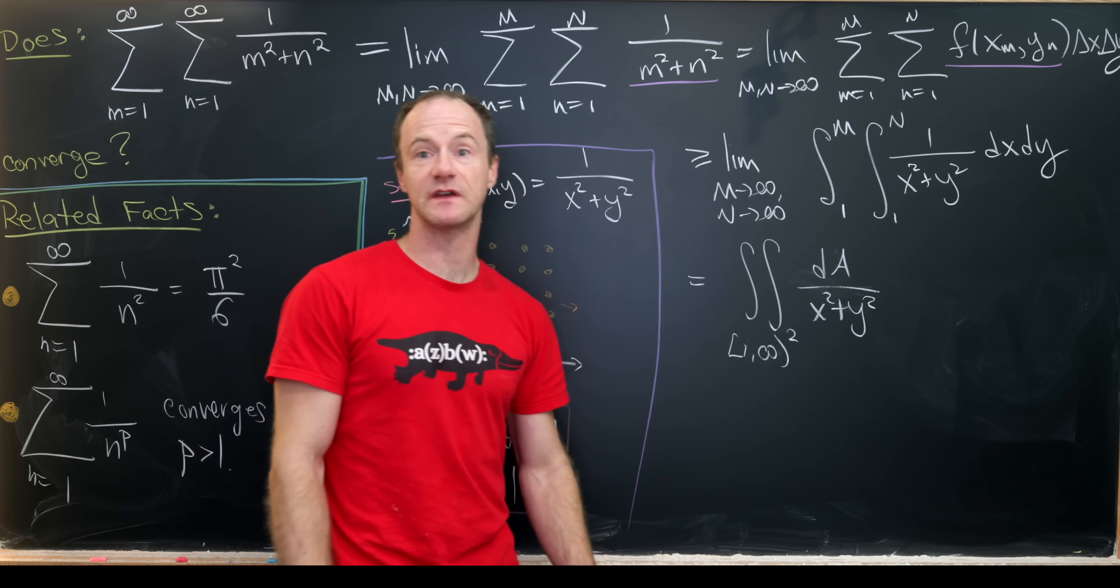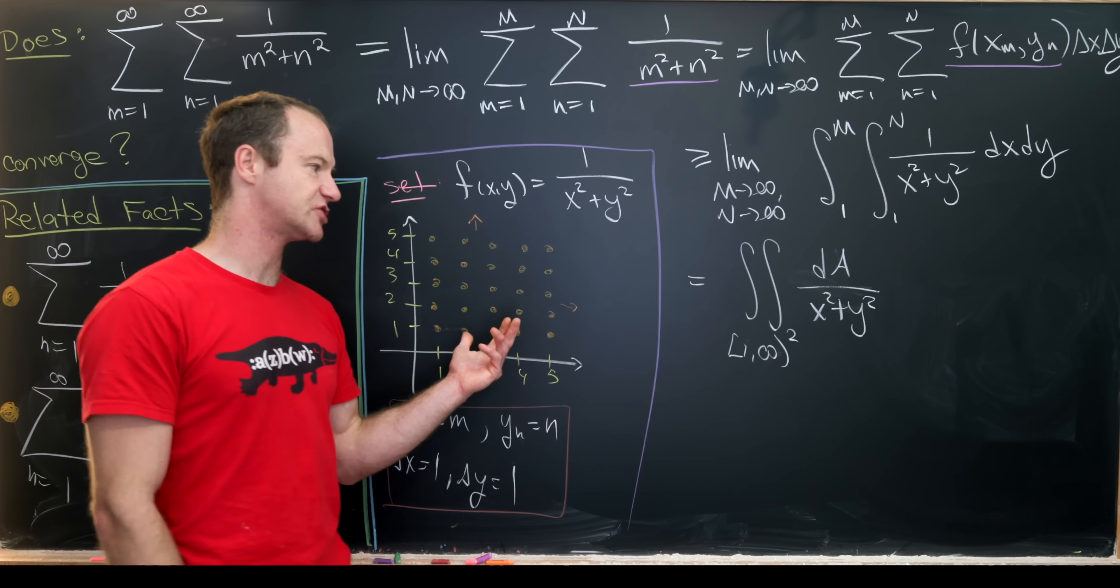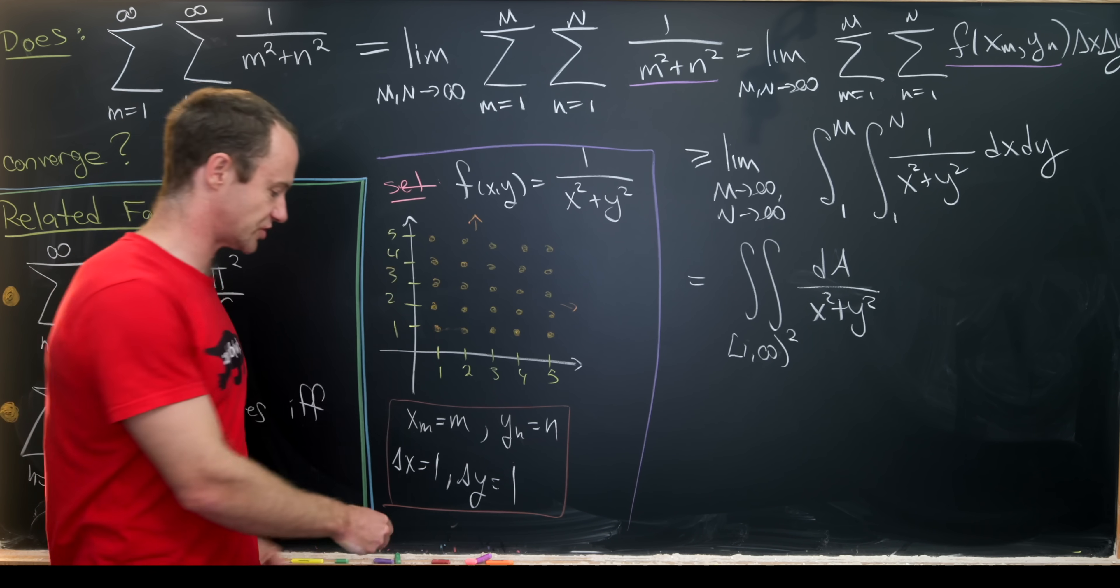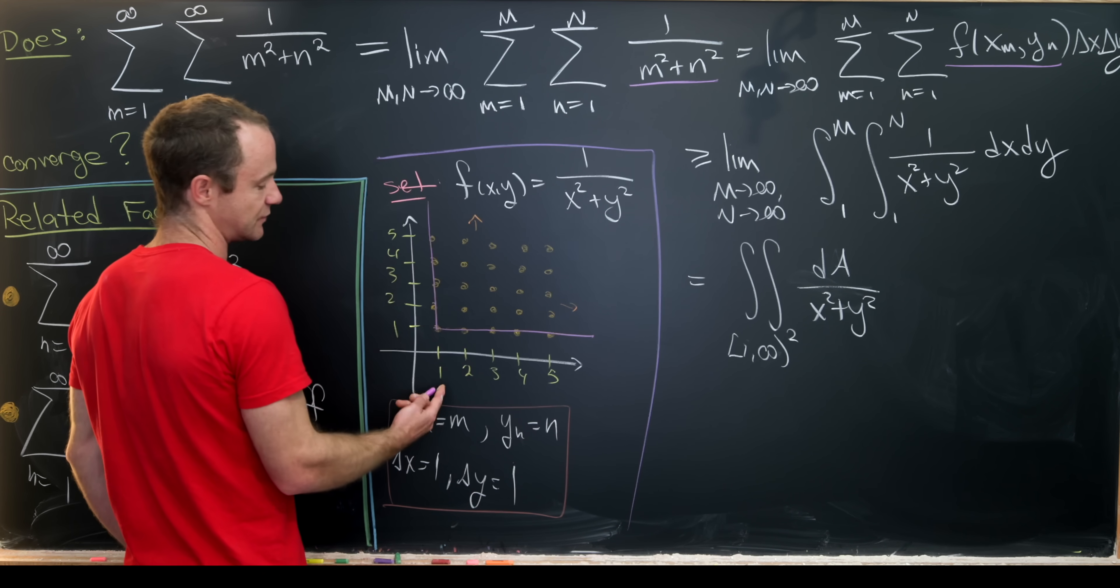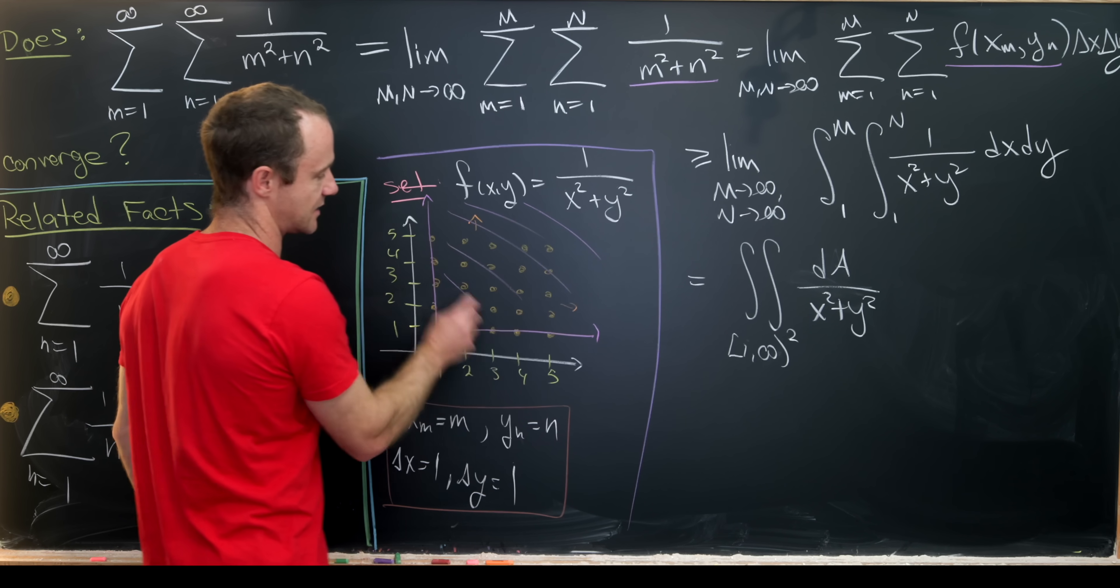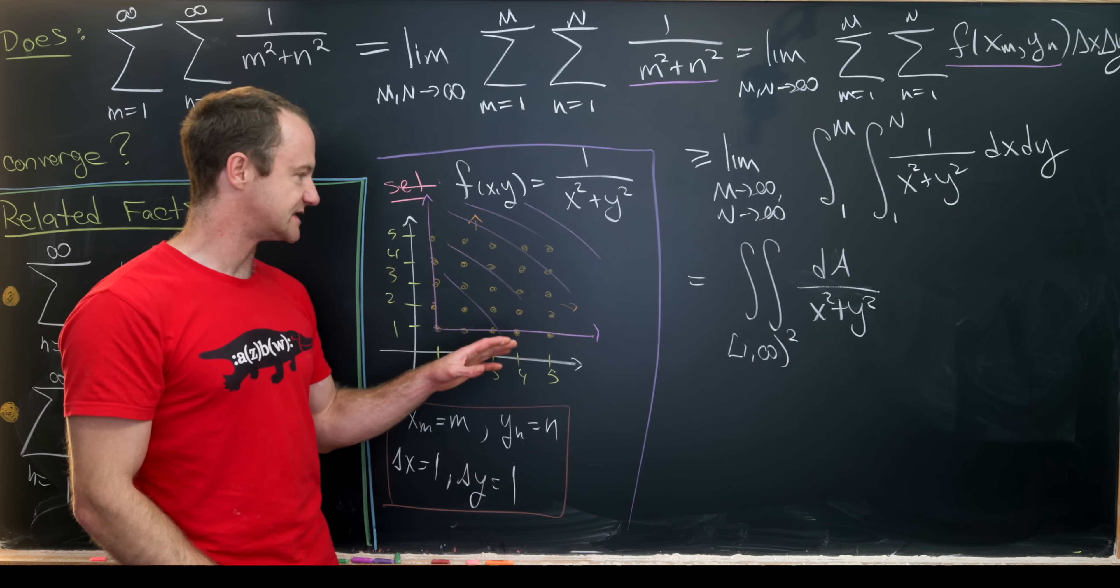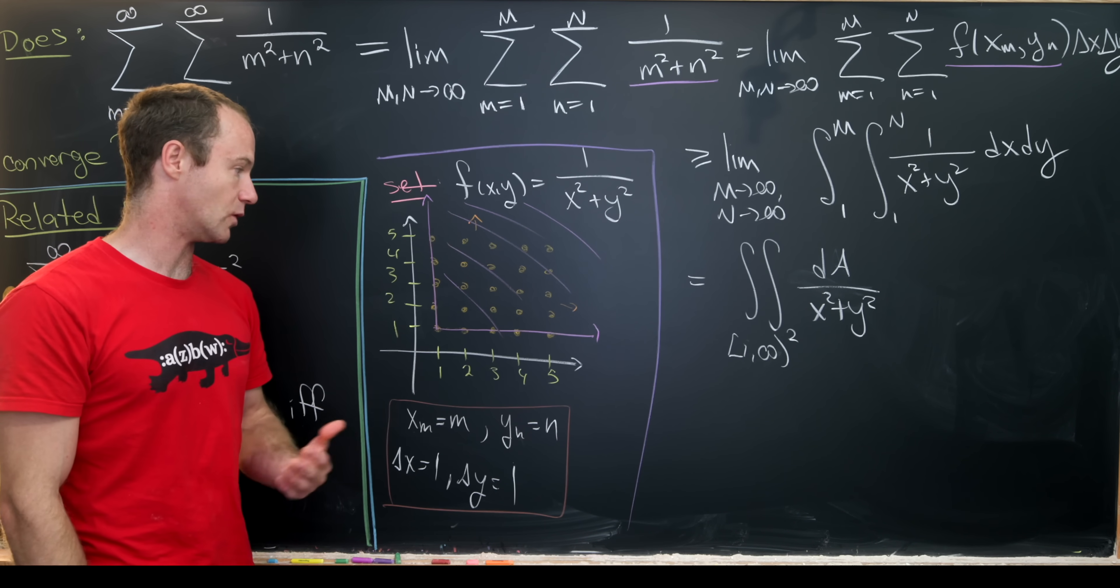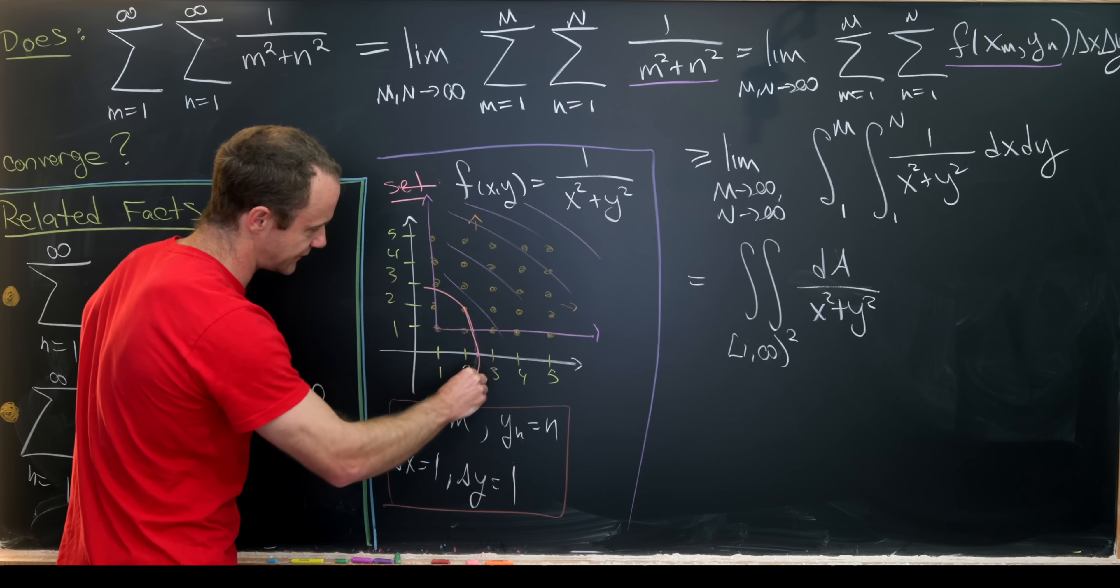Then since we're integrating over something that involves x squared plus y squared, that really motivates us to change to polar coordinates. But this is a bit tricky to change to polar coordinates because we're not integrating over the entire first quadrant. We're integrating over the portion of the first quadrant that's bound by these two rays. So this ray where x is equal to 1 and this ray where y is equal to 1. So that would be this stuff right here.